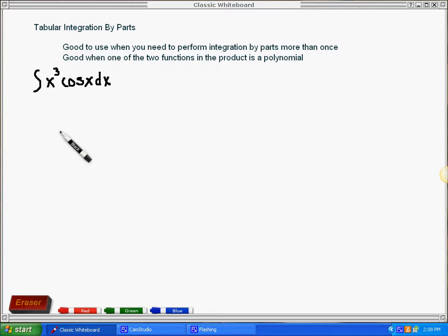If you'll recall, we usually let u be the part in the product that will get simpler when we take derivatives, which definitely won't be cosine. When you take the derivative of cosine repeatedly, it just alternates back and forth between cosine and sine.